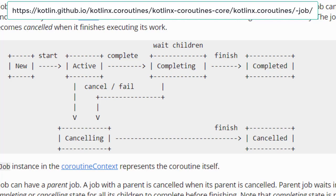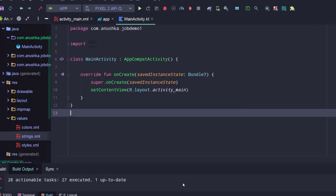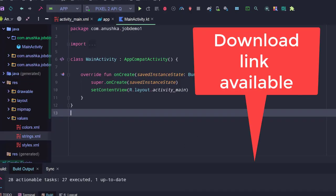We can use these to know about the status of the coroutine. To cancel the coroutine, we invoke the cancel function of the Job instance. A Job is active while the coroutine is working. When the coroutine finishes its task, the Job reaches the Completed state. If any error happens, or if we invoke the cancel function, the Job will reach the Canceling state. I created this project to show you how these Jobs work.